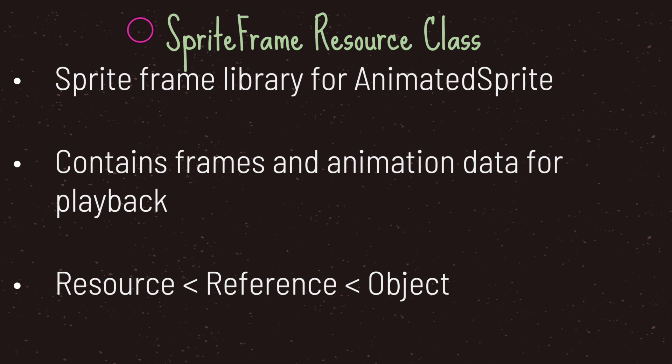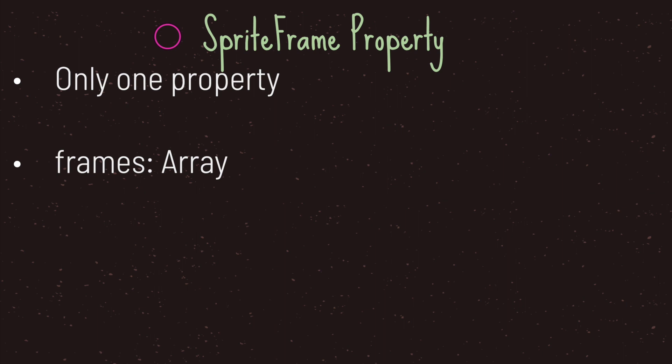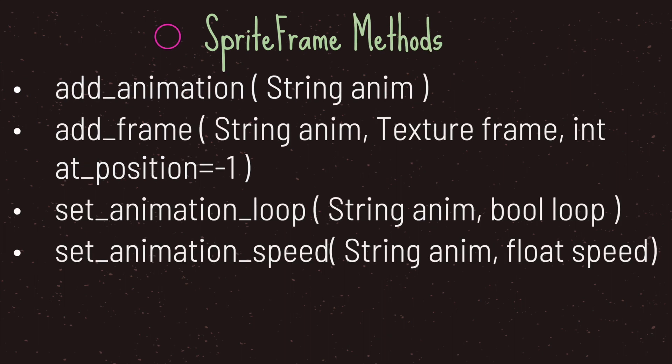The SpriteFrames resource class is basically a library of sprites to be used inside your AnimatedSprite class. It contains frames and animation data for playback and inherits from the Resource class. The SpriteFrames resource class comes with one property called frames, which is just an array, plus several methods.